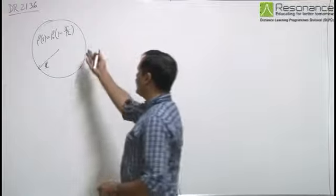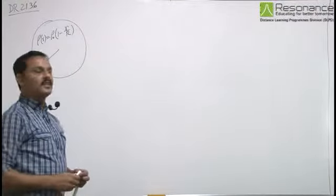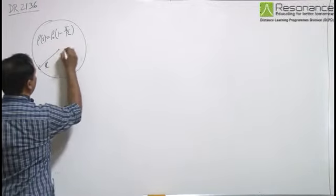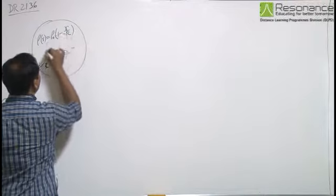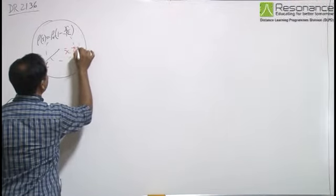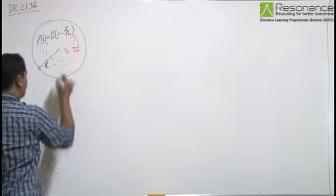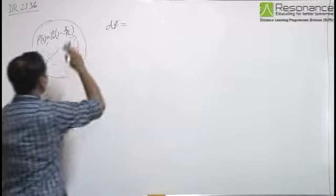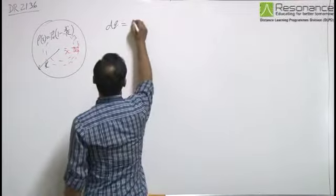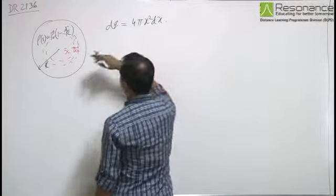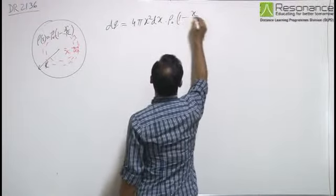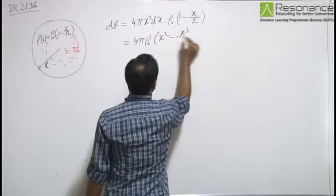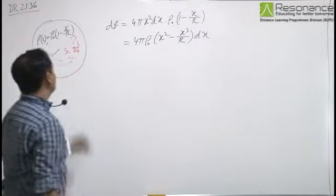To find the electric field at a point, we consider a Gaussian surface and find the enclosed charge. Assume a spherical shell of radius x with thickness dx. The charge in this elemental spherical shell is dq = 4πx²dx · ρ₀(1 - x/R), which equals 4πρ₀(x² - x³/R)dx. This is the charge on the elemental portion.